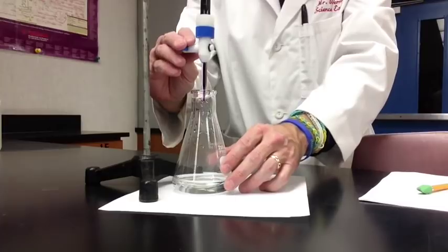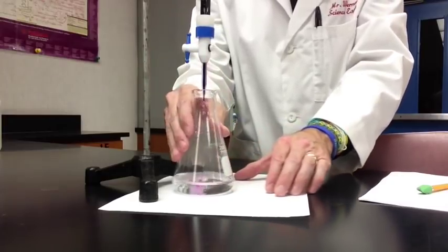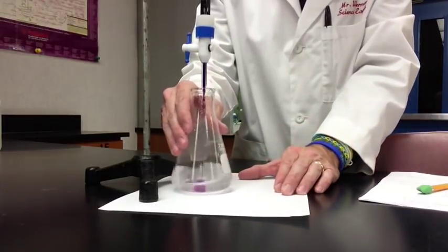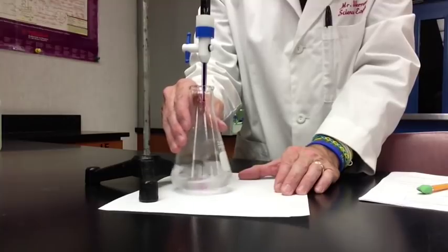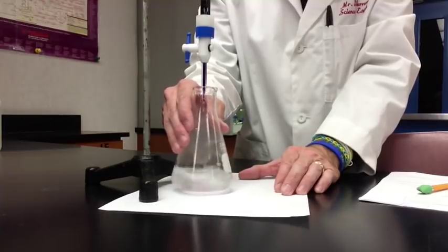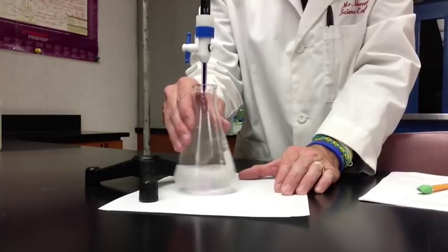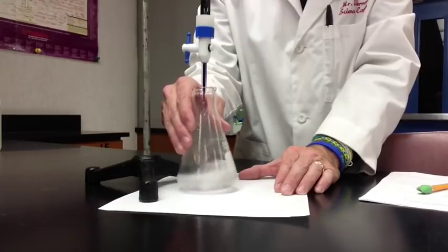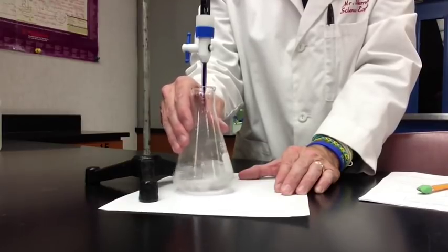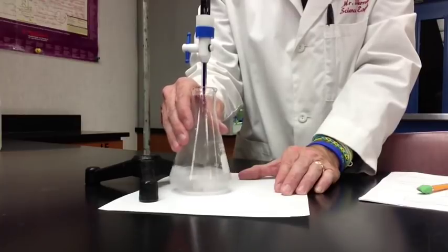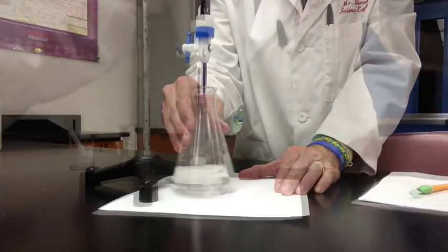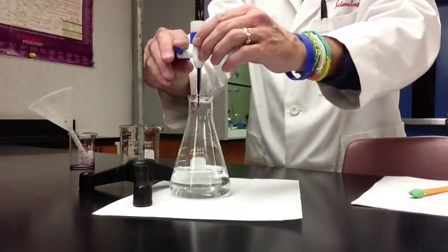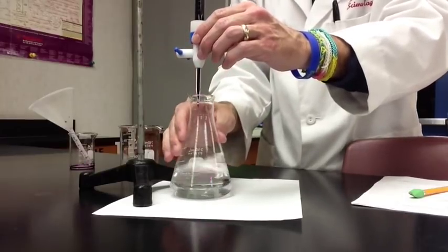Now you could have it already set at whatever measurement. It could be at the zero or whatever your starting measurement is, make sure you record that. Then you open up and you can let it stream for a little while because it's going to take probably 20, 30 maybe more milliliters and you start swirling it. Make observations of what's happening inside the flask as it's coming out. The swirling is a very important part of this.